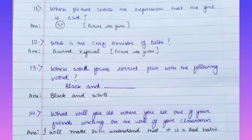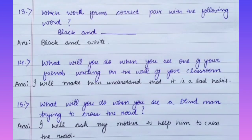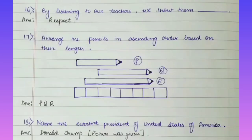Question No. 14: What will you do when you see one of your friends writing on the wall of your classroom? Answer is: I will make him understand that it is a bad habit. Question No. 15: What will you do when you see a blind man trying to cross the road? Answer is: I will ask my mother to help him cross the road. Question No. 16: By listening to our teachers, we show them Dash. Answer is Respect.